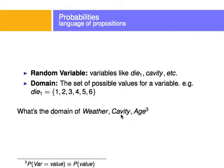A cavity — whether you have a cavity or not — that's usually just two values: true or false. And age, for example, can be any value between, if you're thinking of the age of a dog, any value between one and maybe 20. Maybe dogs can live longer, but this is any number.